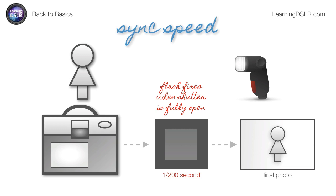You would say the sync speed of my camera is 1/200th of a second. Some cameras, like the Canon 7D, is 1/250th of a second. You want a very fast sync speed because you're going to be able to freeze the action. Even though the burst of light is fast, you are letting in the ambient light for 1/200th of a second, so the faster it is, the more likely you're going to freeze everything in the frame.